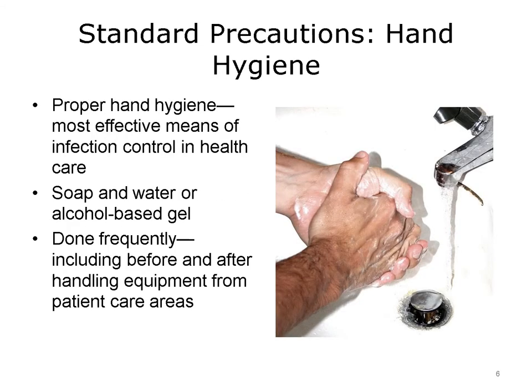The most effective means of controlling infection in the health care setting has been shown to be proper hand hygiene, which equates to frequent hand washing with alcohol-based gel or soap and water. Using proper techniques ensures you are cleansing your hands of bacteria and preventing cross-contamination. Hand hygiene must be performed before and after eating, before and after using the restroom, before and after being in patient care areas, before and after handling equipment from patient care areas such as computers, medication scanners, and mobile devices, and when returning to your organization after being off-site.